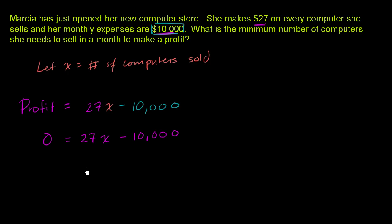We can add 10,000 to both sides so it's no longer on the right-hand side. And we are left with 10,000 is equal to 27x. And then to solve for x, we just have to divide both sides by 27. Let's do that. Divide both sides by 27.